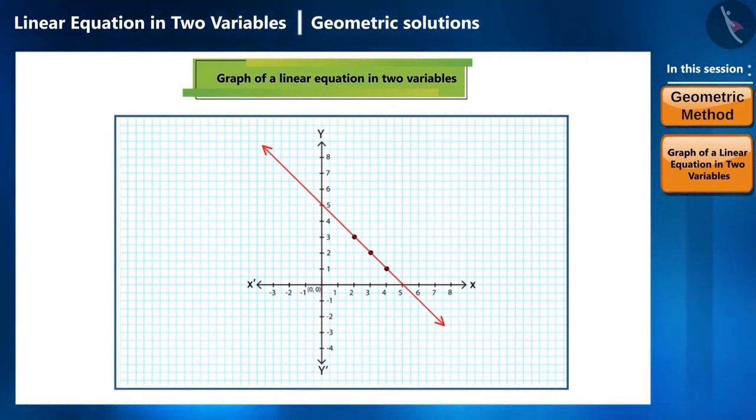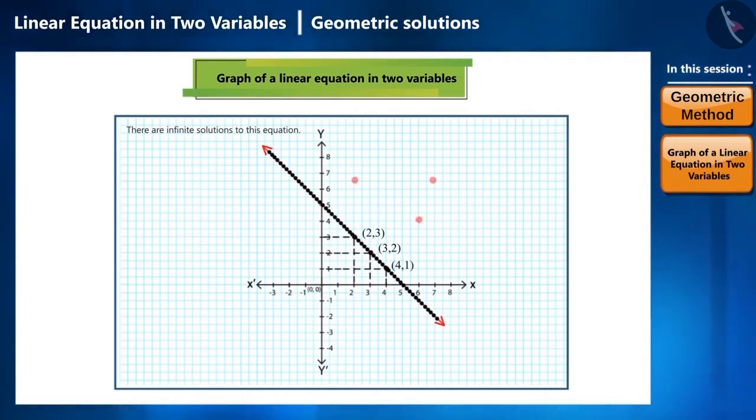This is what we call the solution of the equation. That means, every point on this line is a solution of this equation, which we can get by putting perpendicular on the x and y axis. The three points that we considered earlier and constructed this line are the solution of this equation. Apart from this, there are infinite solutions to this equation. No other points outside this line are the solution to this equation.